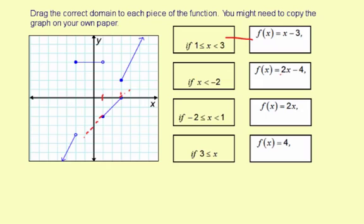Next piece, f of x equals 2x minus 4. So I'm looking for a slope of 2 and a y-intercept of negative 4. This one has a slope of 2. Looks like it crosses right near the origin.